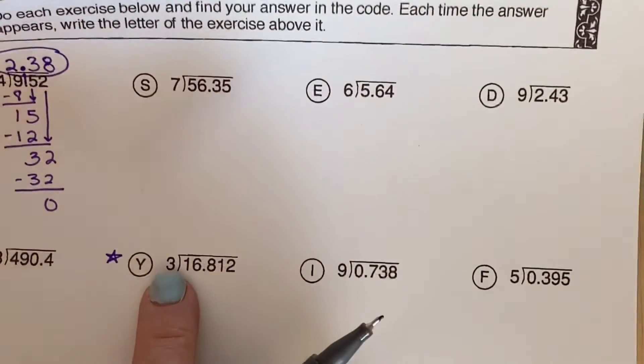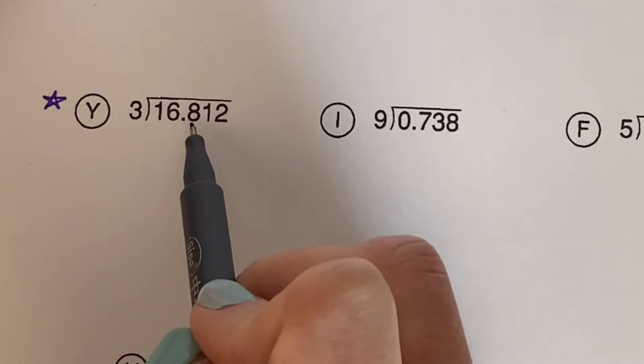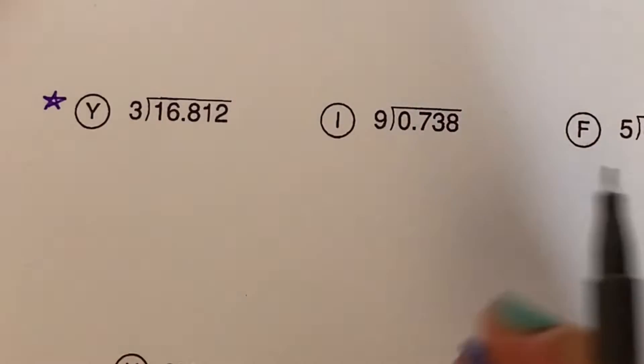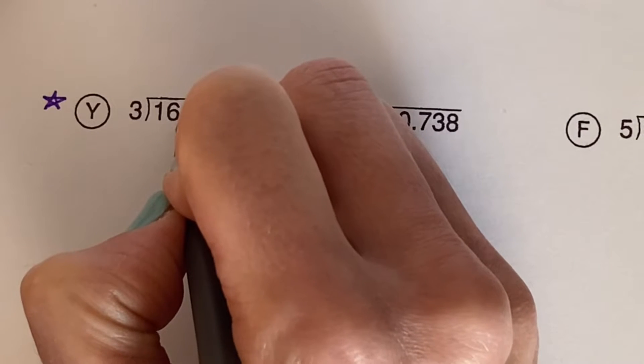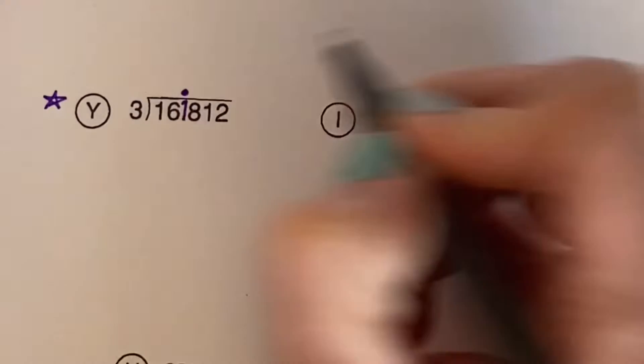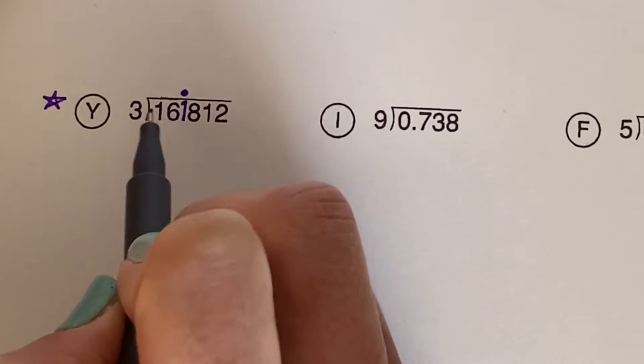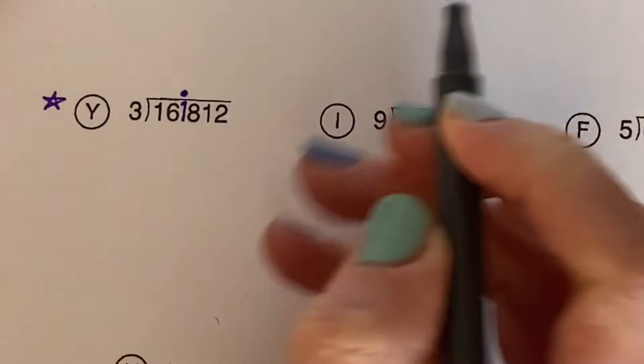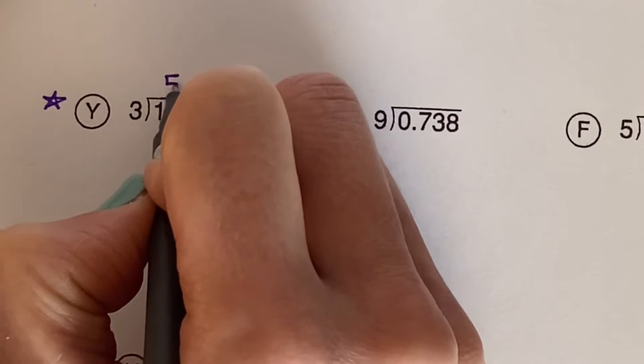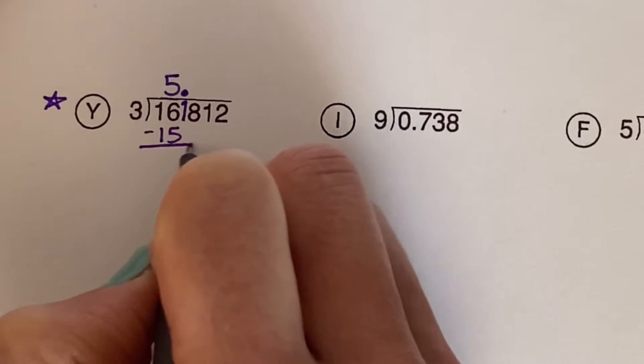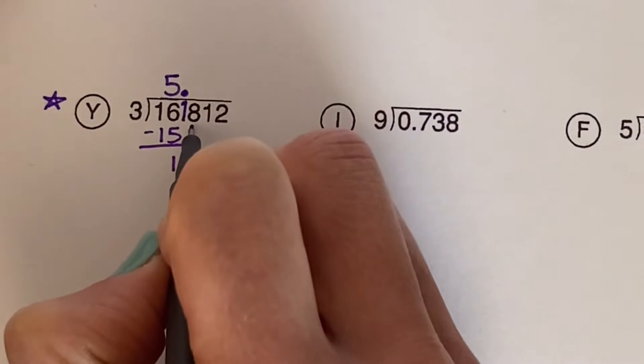All right, let's go ahead and do problem Y. 16.812 divided by 3. It's already written for us in our right way, so we'll go into step number 2. Bring our decimal point straight up, and let's divide. 3 into 1? Nope. 3 into 16? Yup. 5 times. 5 groups of 3 is 15. Get 1. Bring down the 8.